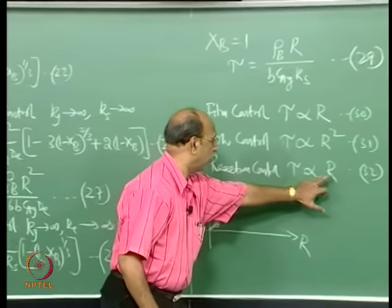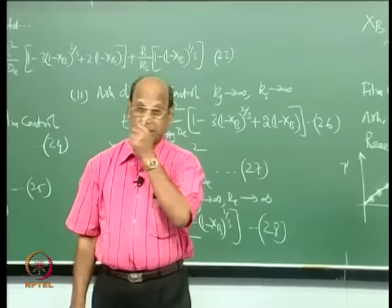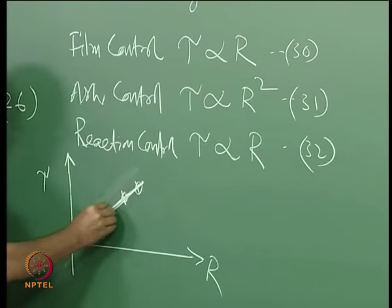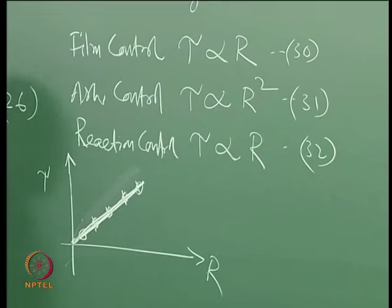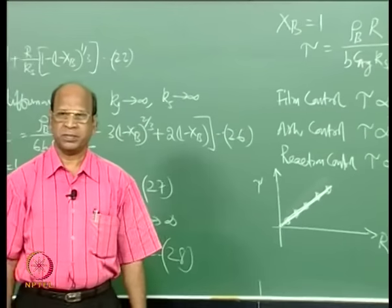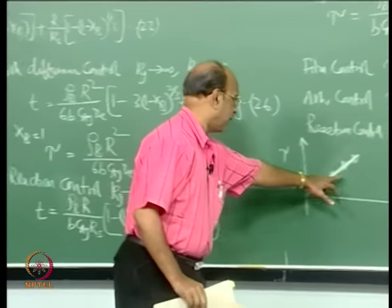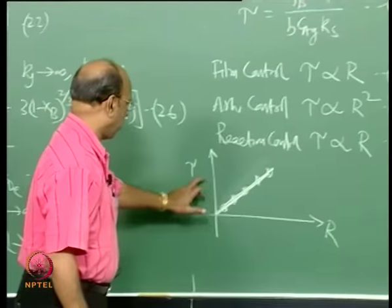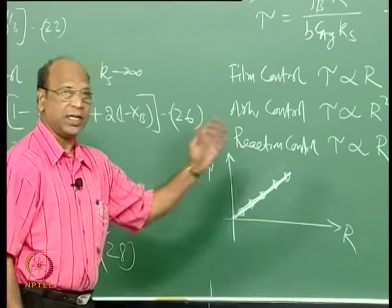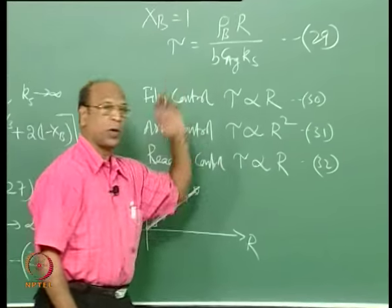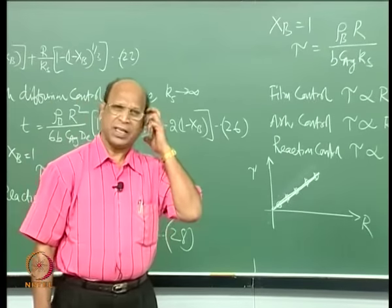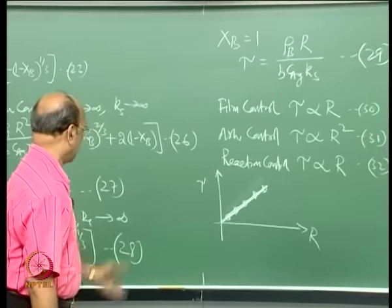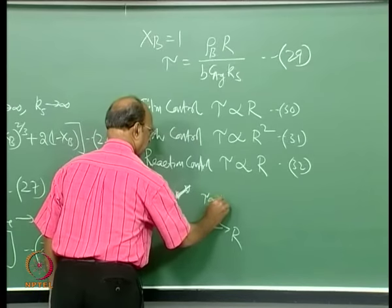There is a catch: both film control and reaction control give tau proportional to R. If I plot tau versus R^2 and get a straight line, that indicates ash diffusion control — R squared means it is diffusion control. On a log-log plot, a slope of 2 confirms R^2 dependence. Between film control and reaction control, both proportional to R, I need another way to differentiate.